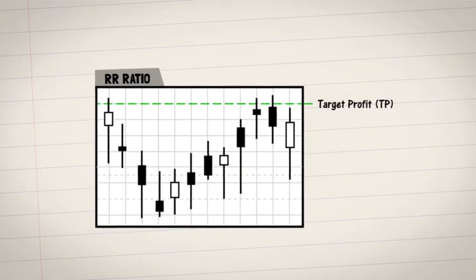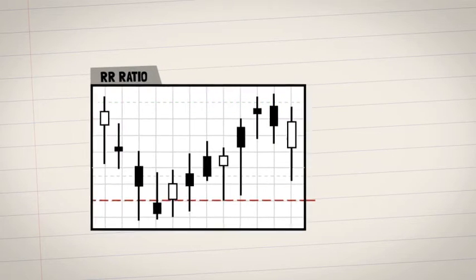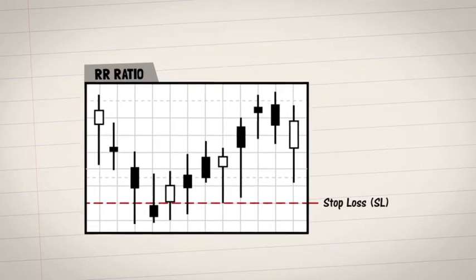Next, the TP or target profit. This is the price you expect the stock to reach. Finally, the SL or stop loss. This is the price at which you will definitely get out of the position.